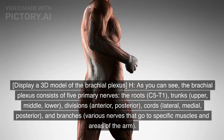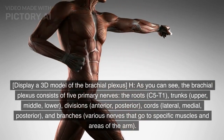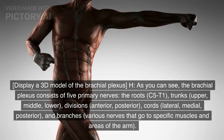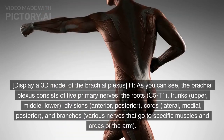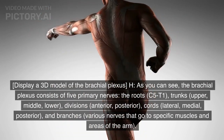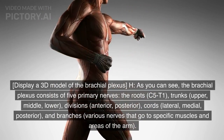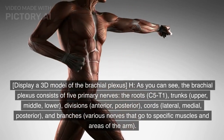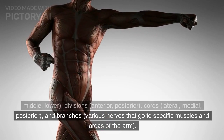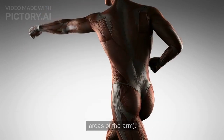As you can see, the brachial plexus consists of five primary components: the roots (C5–T1), trunks (upper, middle, lower), divisions (anterior, posterior), cords (lateral, medial, posterior), and branches — various nerves that go to specific muscles and areas of the arm.